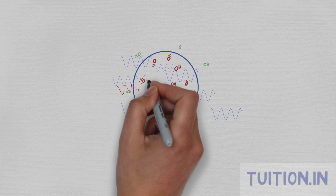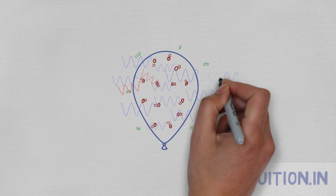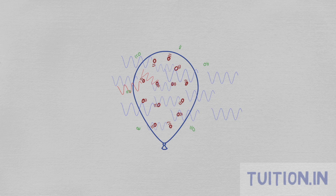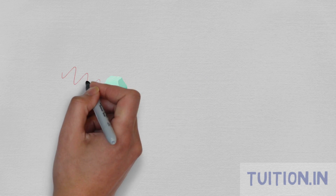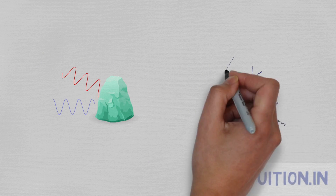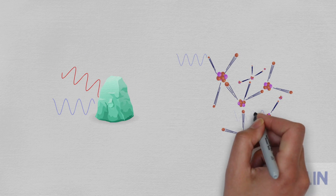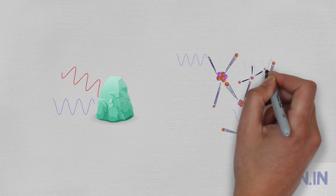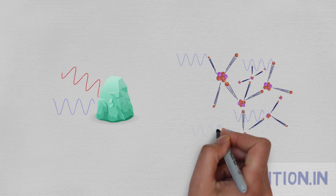The frequency of these outcomes depends on how many electrons the X-rays are likely to hit. Collisions are more likely if the material is dense, or if it is made of elements with a higher atomic number, which means they have more electrons.